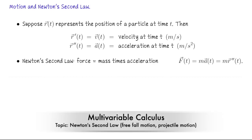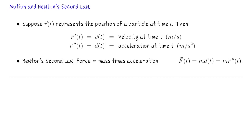In this lecture we're going to take a quick look at Newton's second law. Suppose R of t is a vector value function representing the position of some object at time t. We'll assume here that we're working in XYZ space, so we have an object traveling in three-dimensional space.